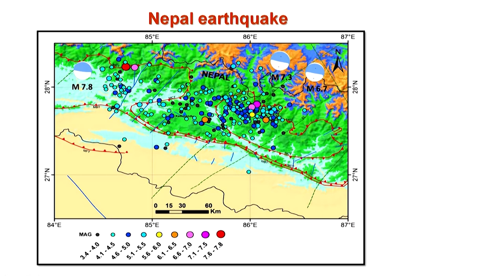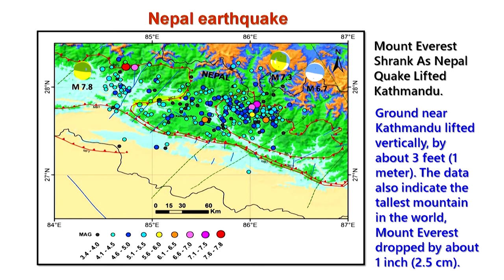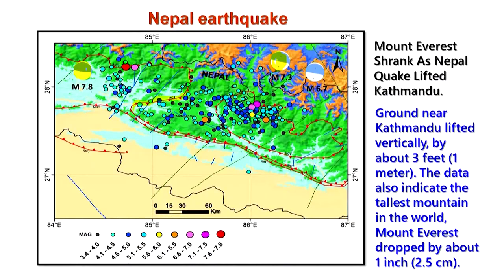The fault responsible was the MCT. The 7.8 and 7.3 magnitude earthquakes occurred, and many other magnitude earthquakes occurred in between. As we know, through analysis of remote sensing data, it was found that Mount Everest shrank, Nepal uplift occurred, and the ground near Kathmandu lifted vertically by about 3 feet. This information came through SAR interferometry techniques applied to various sensor data like ALOS PALSAR, NVSAT, and Sentinel data.